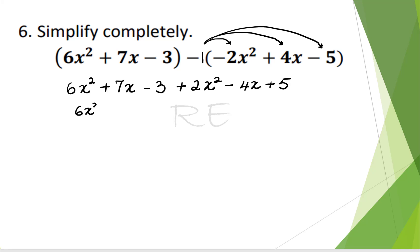We collect the like terms: 6x squared plus 2x squared, 7x minus 4x, and the constant negative 3 plus the other constant positive 5. 6x squared plus 2x squared, 8x squared. 7x minus 4x, 3x. Negative 3 plus 5, positive 2.